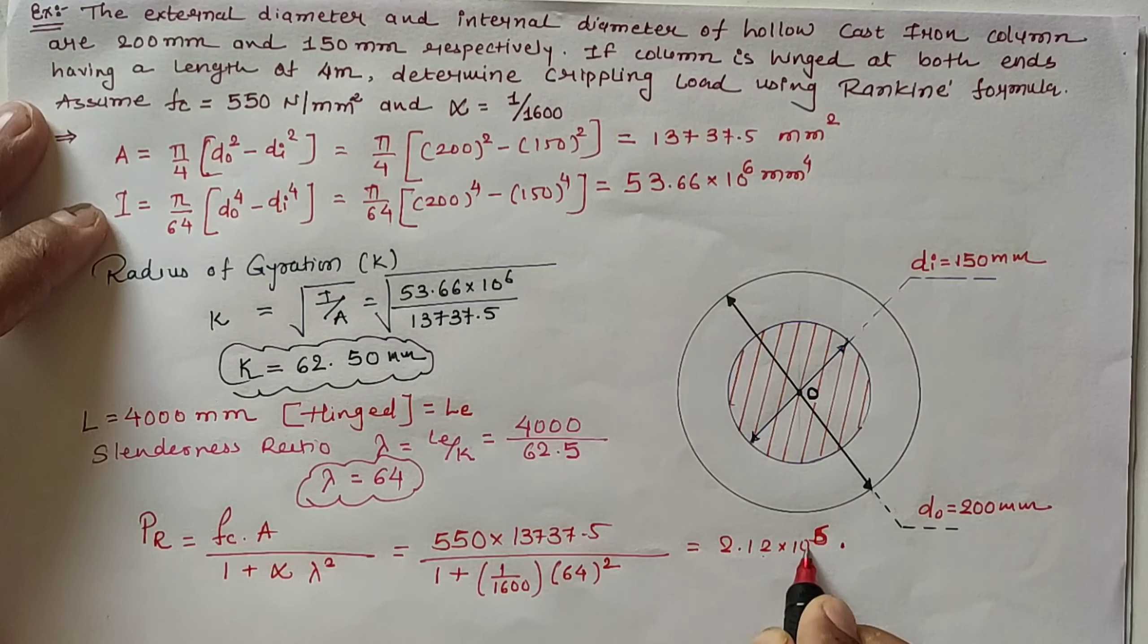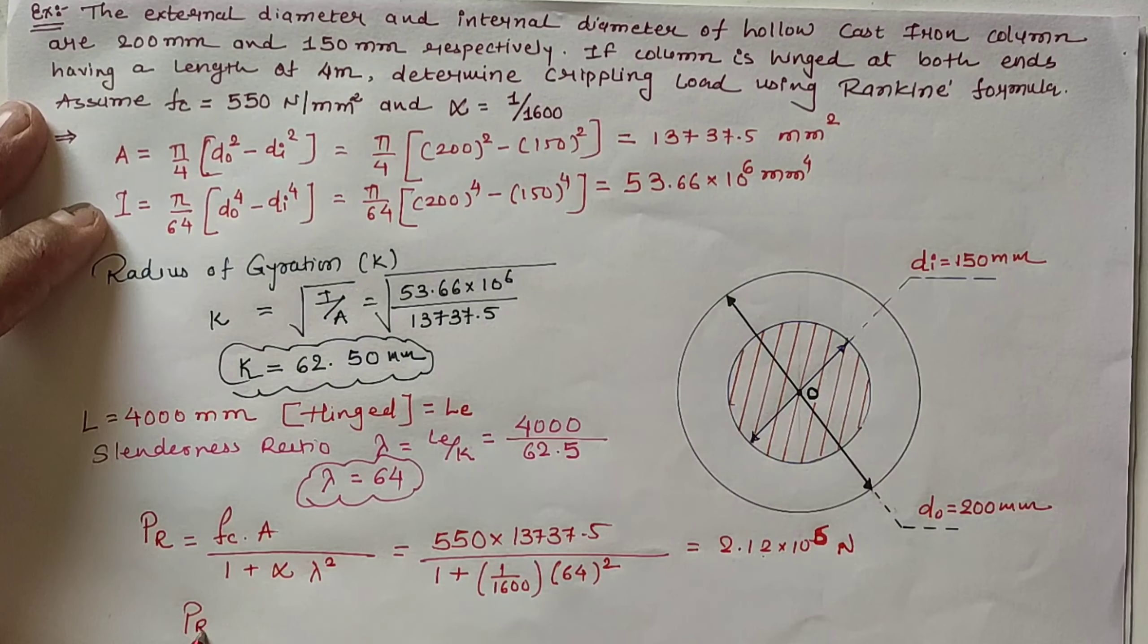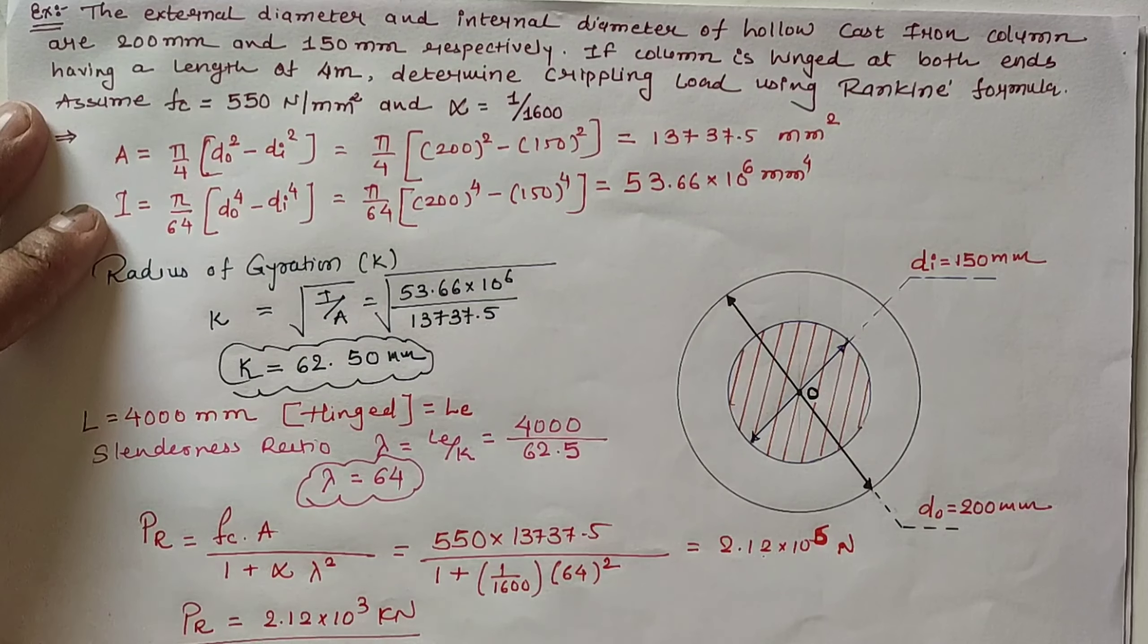Our value is 2.12 × 10⁶ N, or 2.12 × 10³ kN.